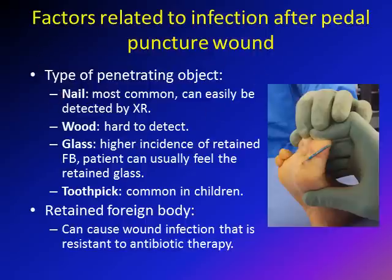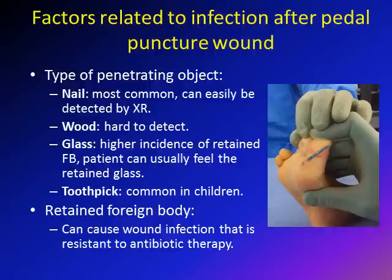The type of penetrating object is related to infection. Nails are most common but can be easily detected on x-rays. Wood is very hard to detect and may be left in the patient for a while. Glass has a higher incidence of retained foreign body, though patients can often feel it. Toothpicks are common in children. Retained foreign body is a very important cause of antibiotic-resistant infection — one patient had a 4-centimeter piece of wood in her foot causing months of resistant infection.